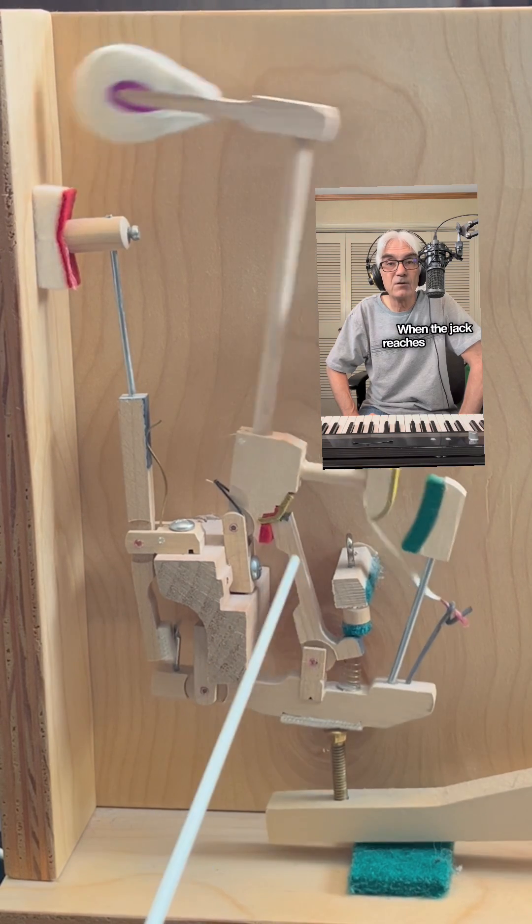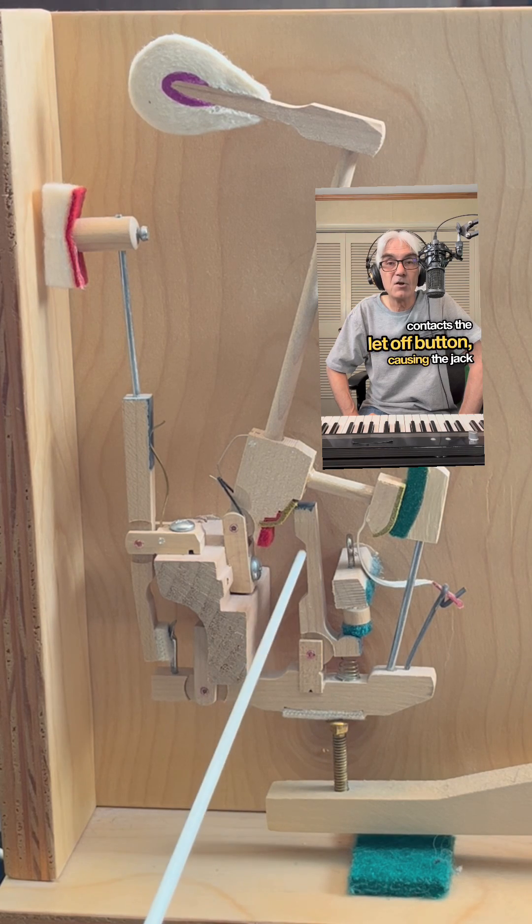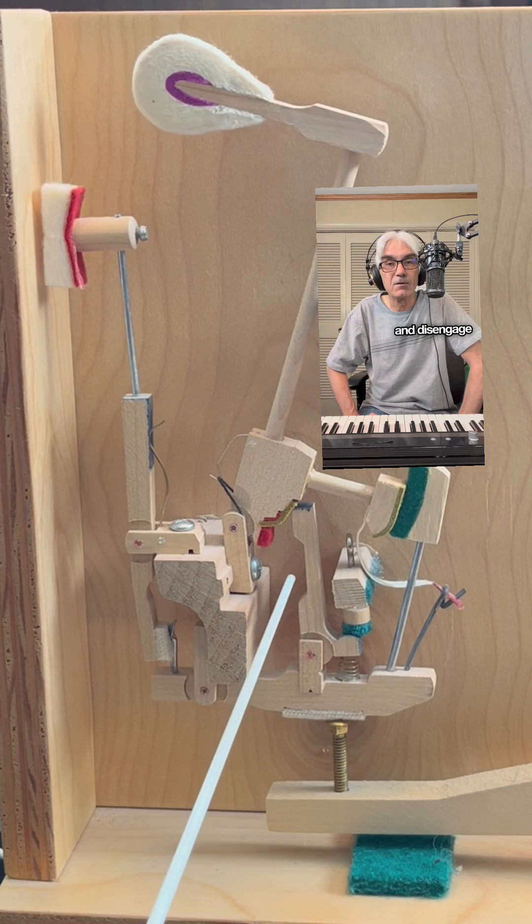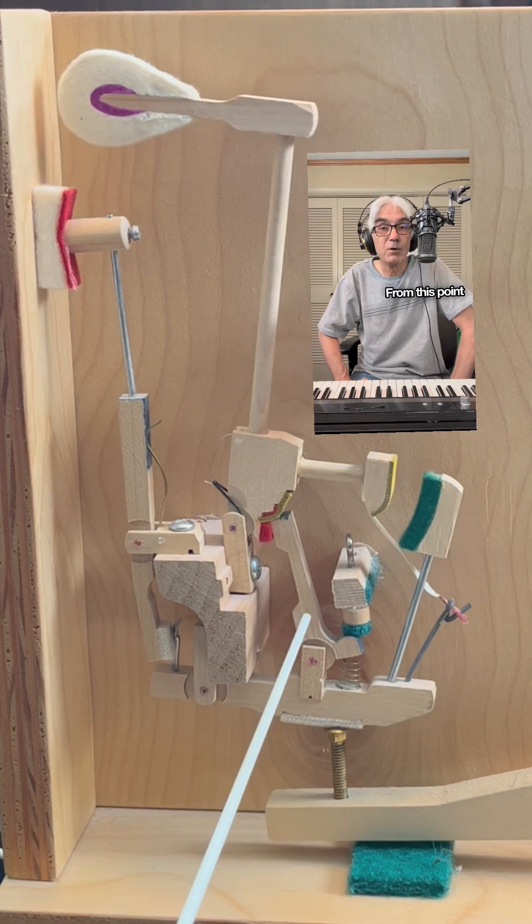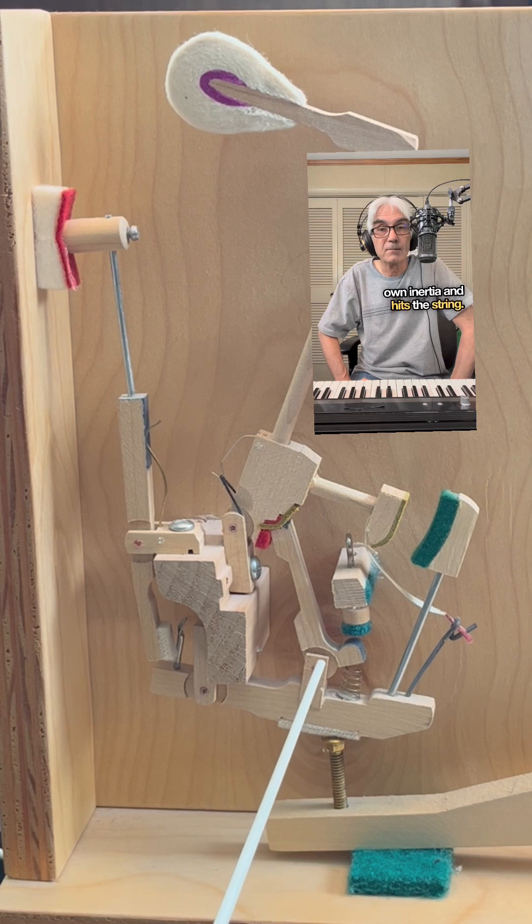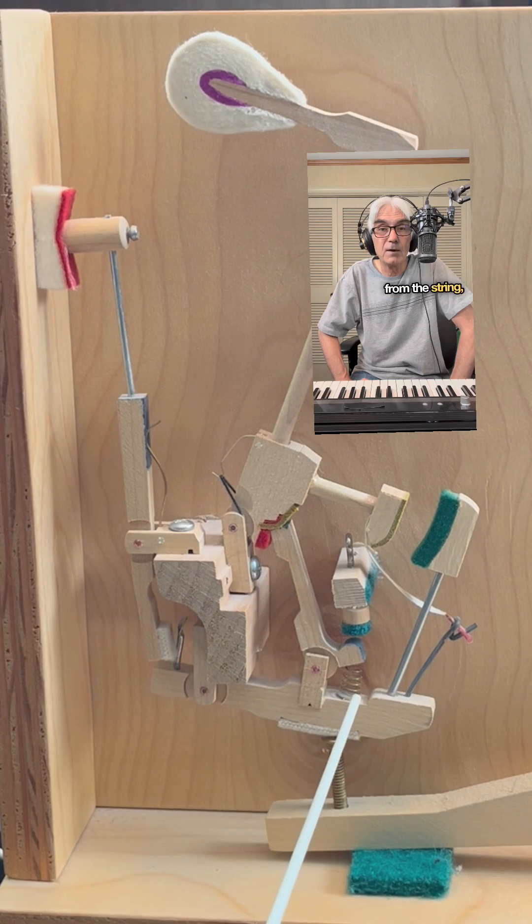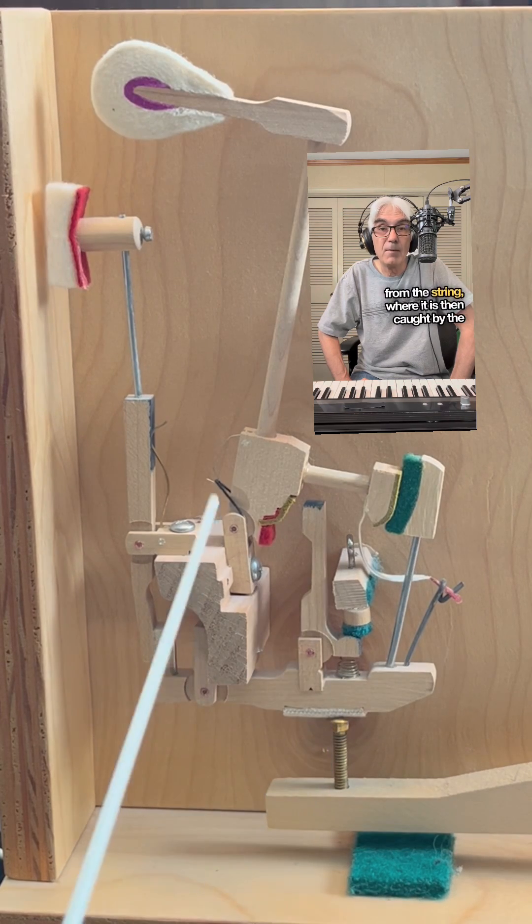When the jack reaches a certain point, the jack heel contacts the let-off button, causing the jack to pivot backward and disengage from the hammer. From this point on, the hammer flies freely on its own inertia and hits the string. Because the jack is disengaged, the hammer can then rebound from the string, where it is then caught by the back check.